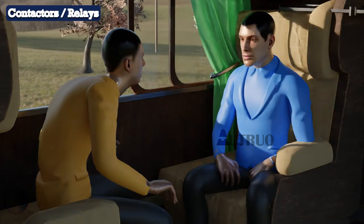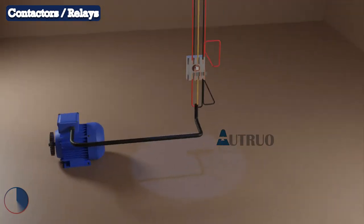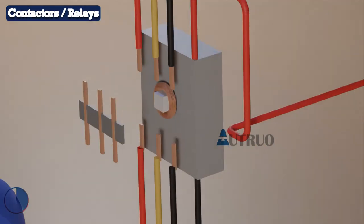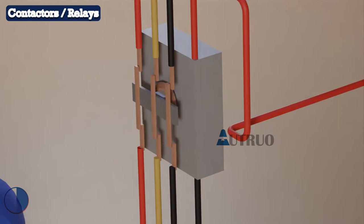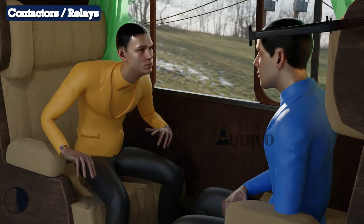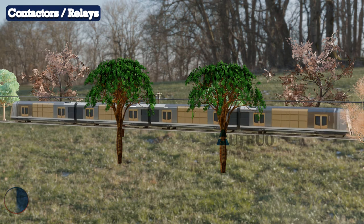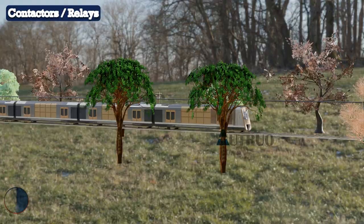Contactors and relays work on the principle of electromagnetic induction. When the coil is energized, a magnetic field is developed. Because the other part within the contactor or relay is metallic, the metallic switch will be attracted towards the energized coil, the open contacts will now be closed, and current will flow from the contactor or relay to the load. When the power contact is closed, the auxiliary contact also switches positions — normally open will become normally closed, while normally closed will become normally open.